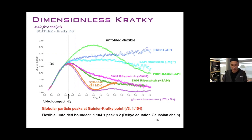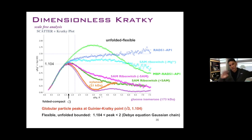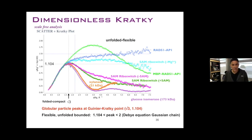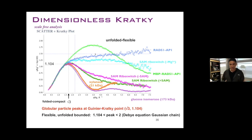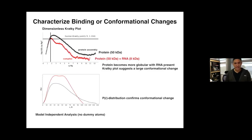This is called the Guinier-Kratky point and is predicted for globular particles. As particles become more unfolded or flexible, you'll see a shift in the peak — for RAD51AP1 the peak is completely gone, but in the biphasic system it's still present with a maximum of less than 2. In this form of the graph you're bound between 1.104 and 2. If you're doing a folding or ligand study, this is a very good comparative plot.